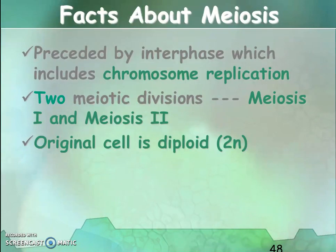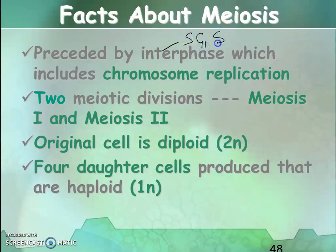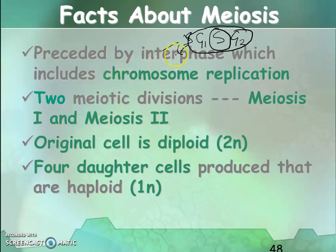These are the terms you need to know before going into the details of meiosis. Now let's look at some facts about meiosis. Meiosis is preceded by interphase. In interphase we had G1, S, and G2 phases — these three together are called interphase. It also includes chromosome replication, which occurs in the synthesis phase.